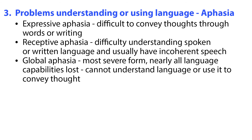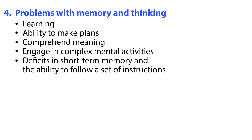The type of aphasia is dependent on the area of the brain's language control center that was damaged. Patients may have expressive aphasia, in which it is difficult to convey thoughts through words or writing — they lose the ability to speak the words they are thinking and put words together in coherent sentences. Patients with receptive aphasia have difficulty understanding spoken or written language, and usually have incoherent speech. Global aphasia is the most severe form, in which the patient loses nearly all language capabilities and cannot understand language or use it to convey thought. Stroke can also cause problems with memory and thinking — learning may be affected, as well as the ability to make plans, comprehend meaning, or engage in complex mental activities. There may be deficits in short-term memory and the ability to follow a set of instructions.